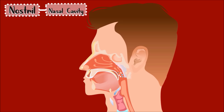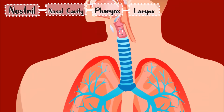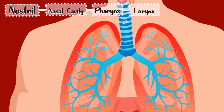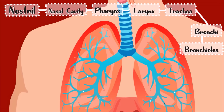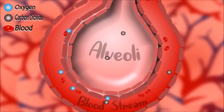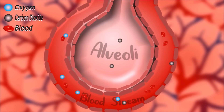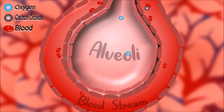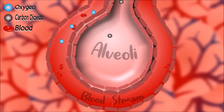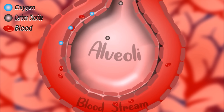The air then goes to the pharynx and larynx, and then to the trachea. The air is then separated in the bronchi and moves towards the bronchioles. Here, oxygen and carbon dioxide are exchanged. The oxygen is transported by the bloodstream through small capillaries, while carbon dioxide from the blood gets inside the alveoli.